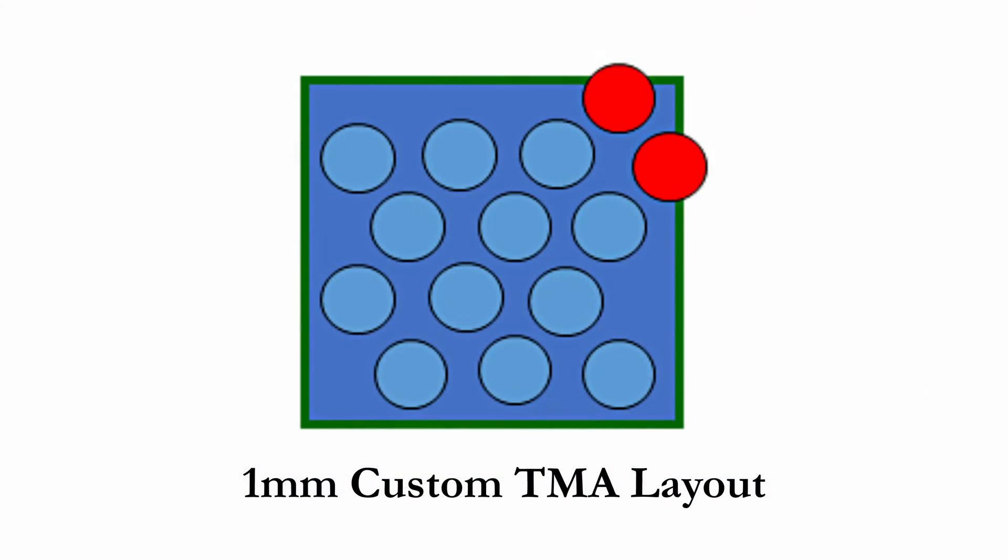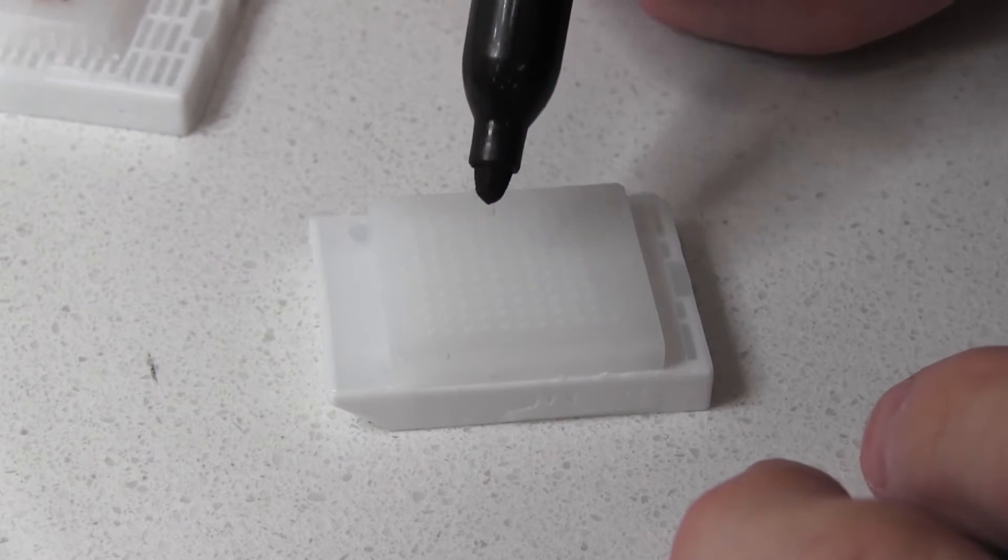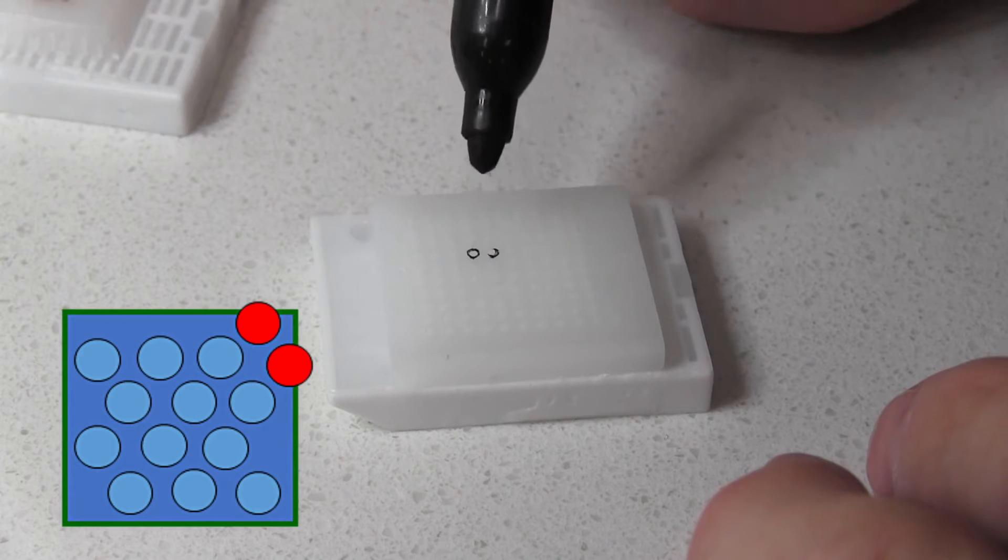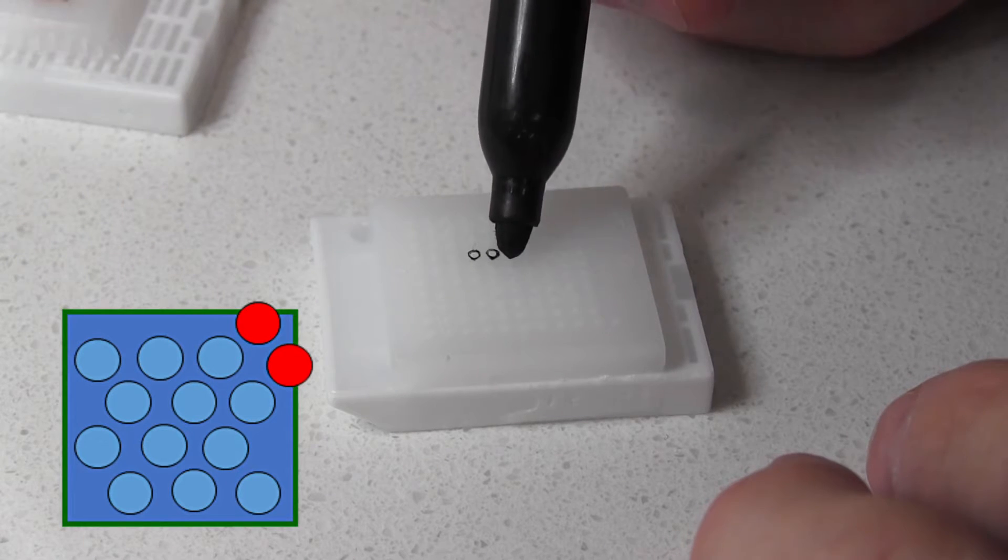This is the custom TMA template we will be using for this project. First what I like to do is mark out the layout on a blank TMA block. A sharpie works really well for this purpose.